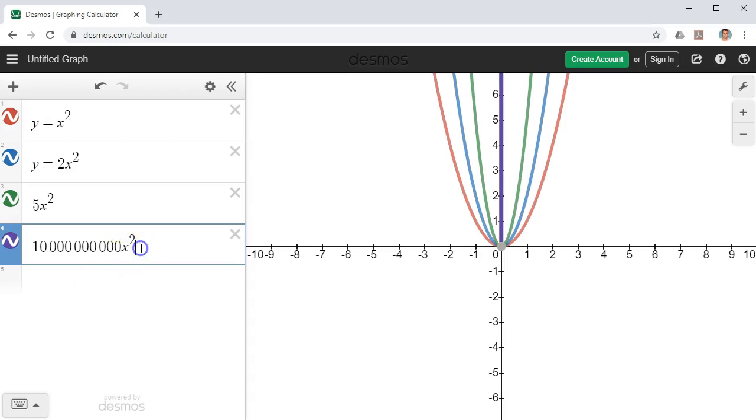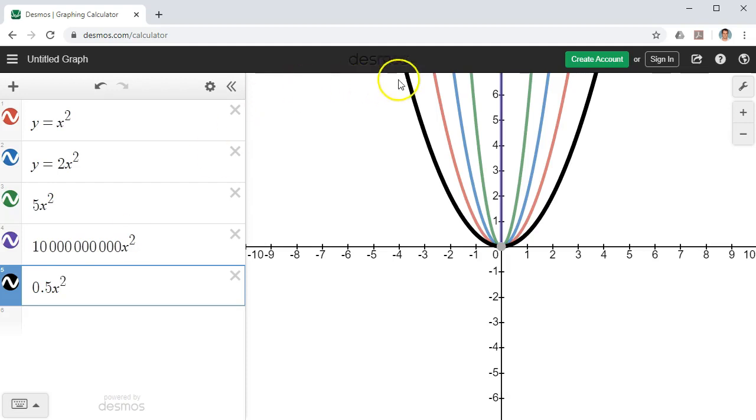So we'll bring up Desmos and let's try a decimal such as 0.5x to the power of 2. This time we get our black graph and we can see it's become wider.